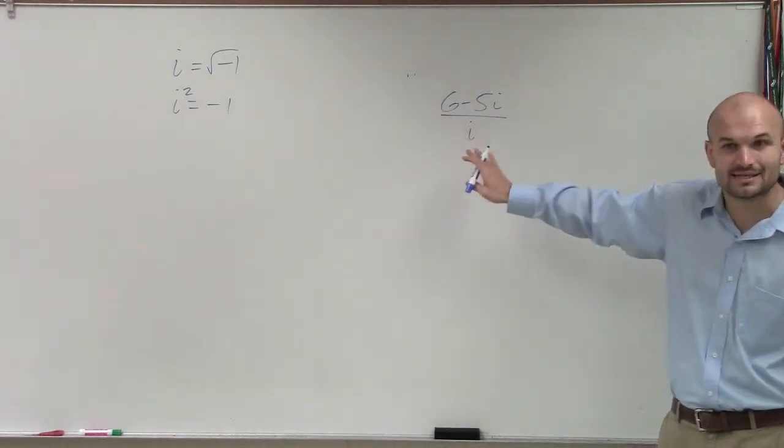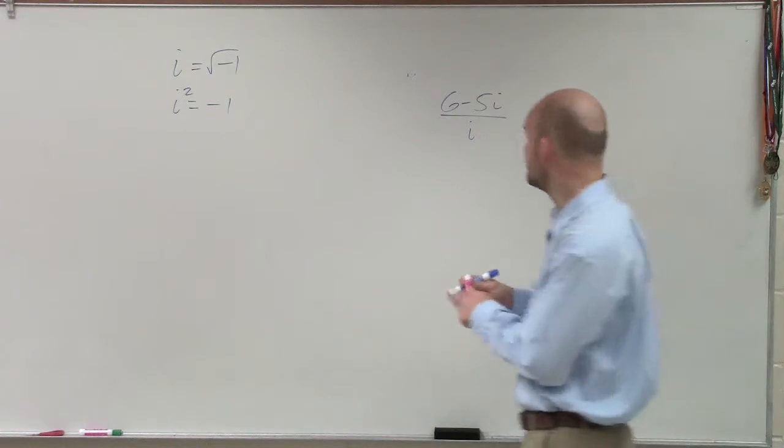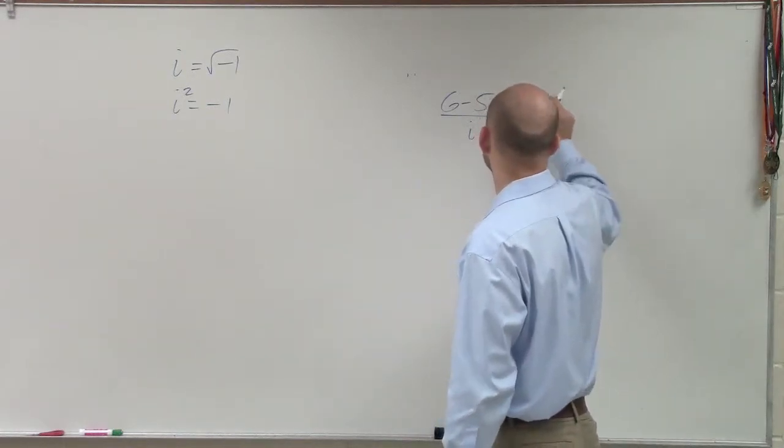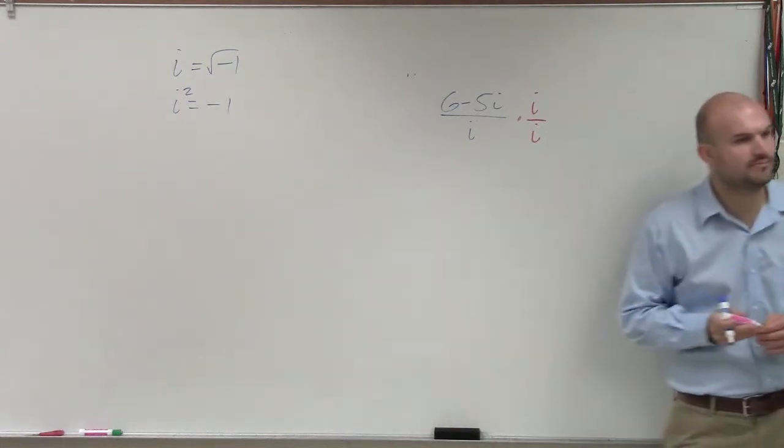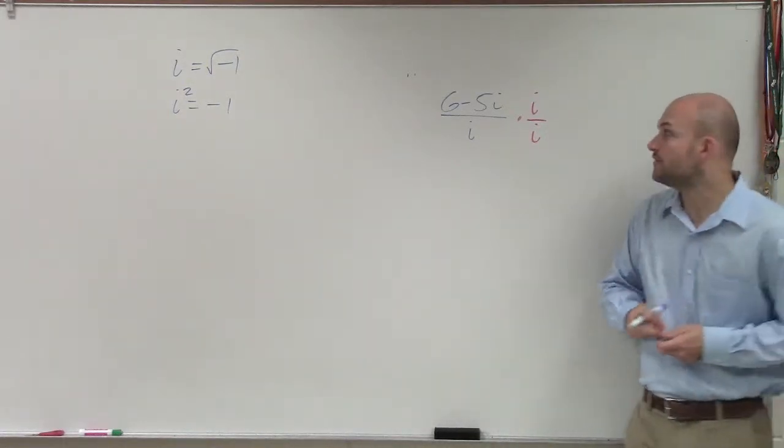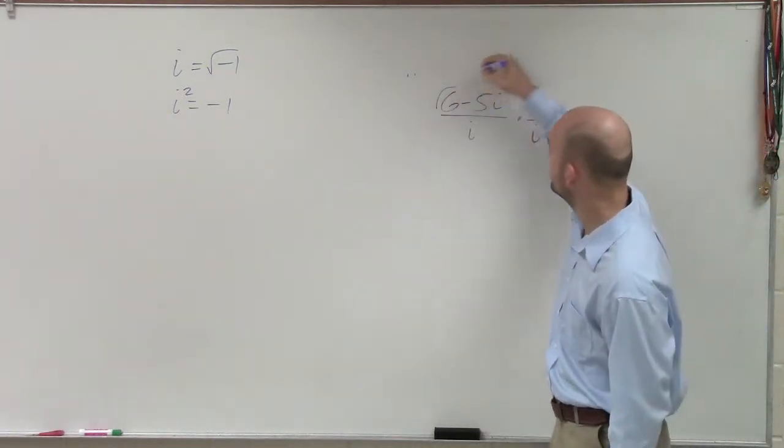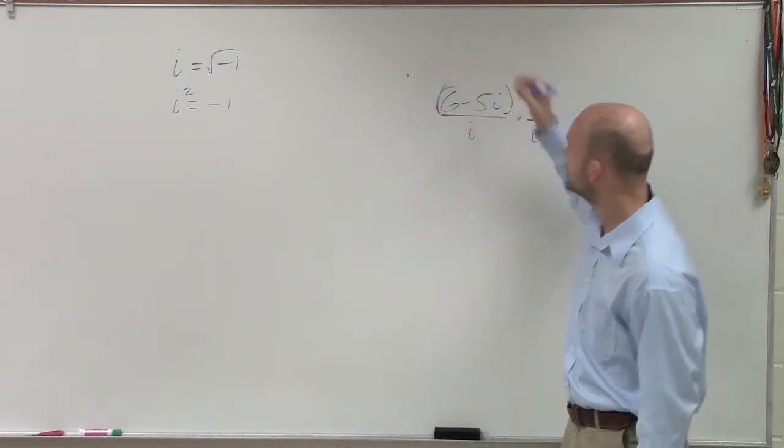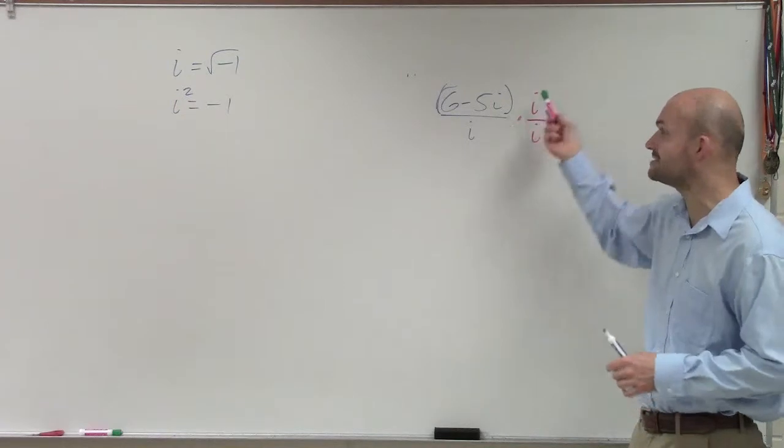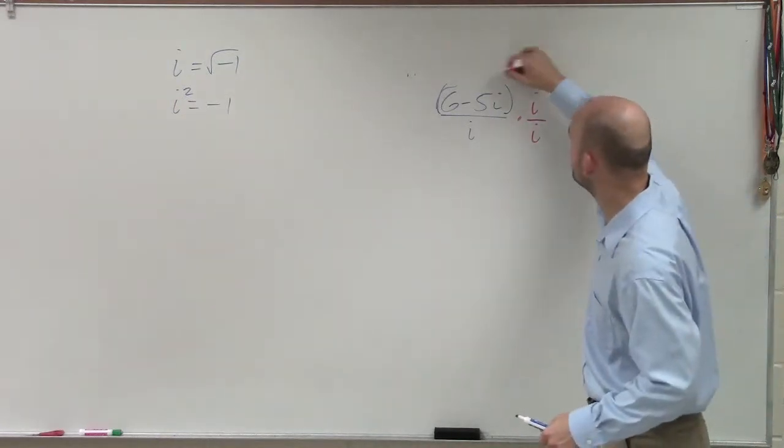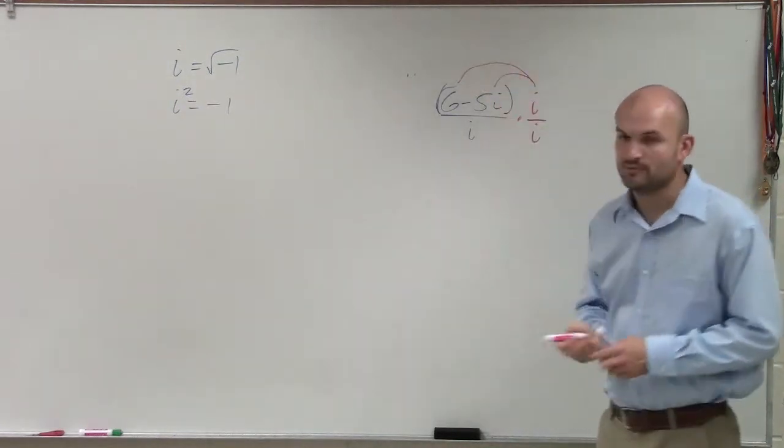So therefore, I need to get i off the bottom. What I'll do is I'll multiply by i over i. Now, I'll kind of go through the major mistakes that students did. The first one, students forgot that this expression is together, so when you multiply 6 minus 5i times i, you have to apply distributive property.